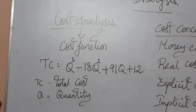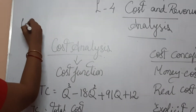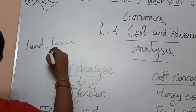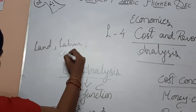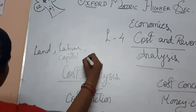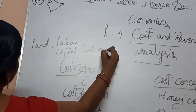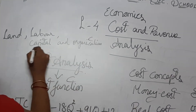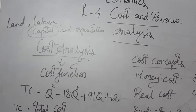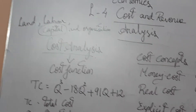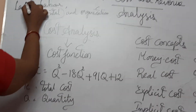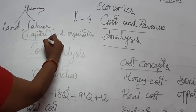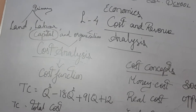The four major factors of production are land, labor, capital, and organization. Land and labor are the primary factors, and capital and organization are the secondary factors.